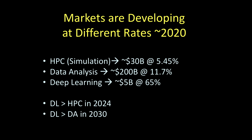Now it's not clear these growth rates will continue, but if they did, deep learning would be bigger than high-performance computing by 2024 or 2025, and deep learning would be bigger than data analysis by 2030. Something is going on — this push isn't just occasional articles about self-driving cars. It's permeating everything.